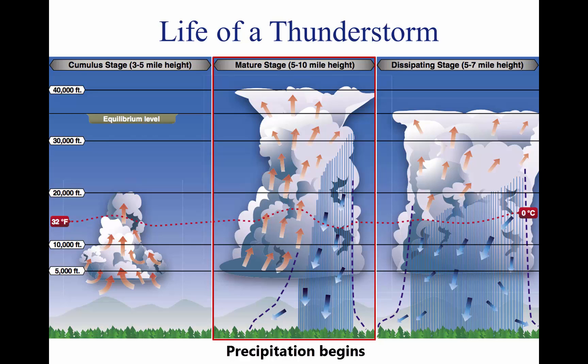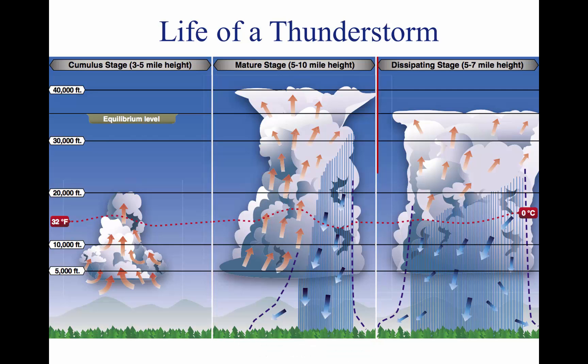Warm, rising air; cool, precipitation-induced descending air; and violent turbulence all exist within and near the cloud. Below the cloud, the downrushing air increases surface winds and decreases the temperature. Once the vertical motion near the top of the cloud slows down, the top of the cloud spreads out and takes on an anvil-like shape.